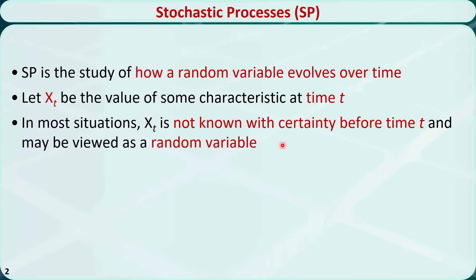An example of xt is the number of students in a classroom 10 minutes after the class starts. Some students may come in late, so we don't know the value of xt for sure before time t. xt is called the state of the stochastic process.